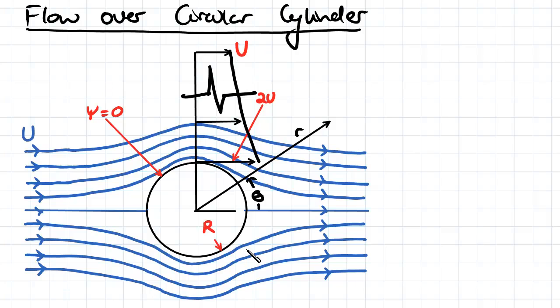So what we first want to do is we want to define the equations for the stream function and the velocity potential for this flow.